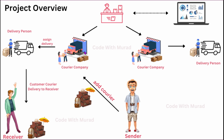For example, Courier Company 1 has five delivery persons — they will register those five delivery persons. Courier Company 2 has three delivery persons — they will register three. Customers can register and log in at any time by themselves by visiting our website.